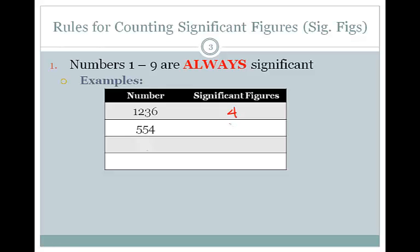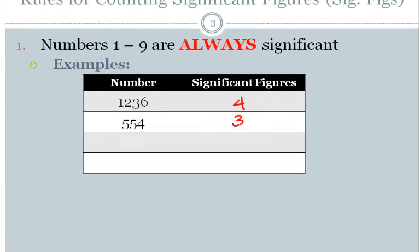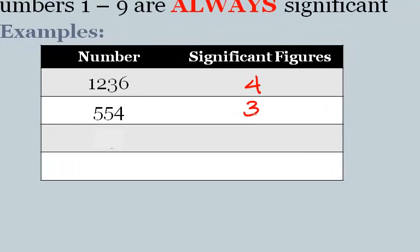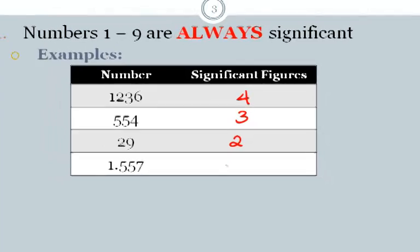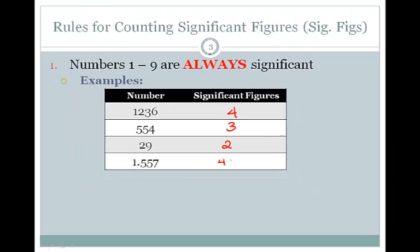Here we have three significant figures: the 5, the 5, and the 4. In 29, there are two significant figures. Here again, all four of these digits are not a zero, so all four of them are significant.